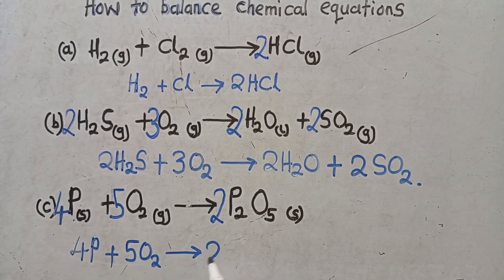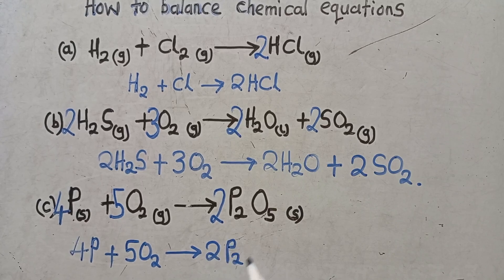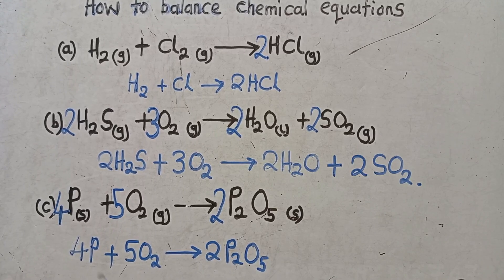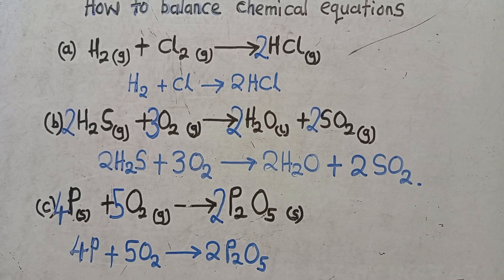Meaning it is just four P plus five O2 giving us two P2O5. This is balanced. This is how you get to balance. So you may not understand this right now, but the more we practice, the more you become better.